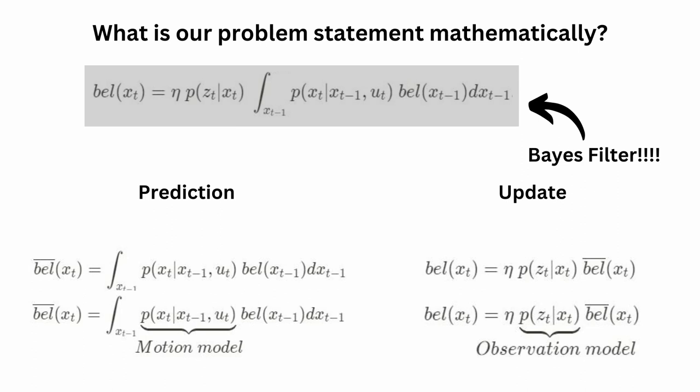Do you also see how this is conceptually like an alpha-beta filter? In your alpha-beta filter, you were also using prediction and update steps. But for an alpha-beta filter, you had to fix your alpha and beta values. The equations here have those alpha and beta values encoded in them. But unlike the alpha-beta filter, we will not hardcode these values. When we introduce the Kalman filter, it will compute these alpha-beta values for every iteration.